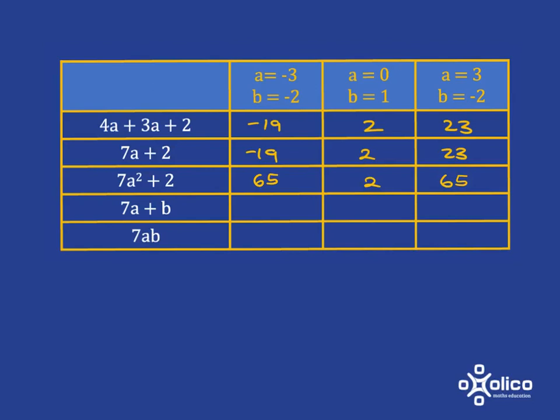For this 7a plus b, when a is negative 3, I'm going to have 7 times negative 3, which is negative 21 plus b, so plus negative 2. Negative 21 subtract 2 is going to give me negative 23.